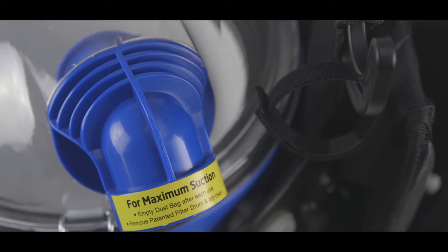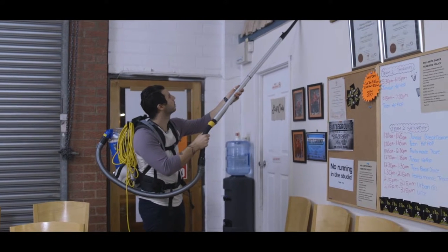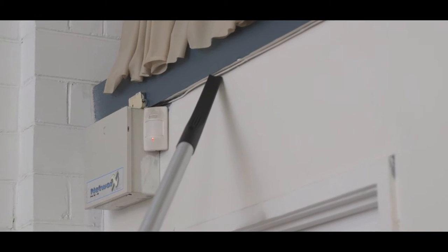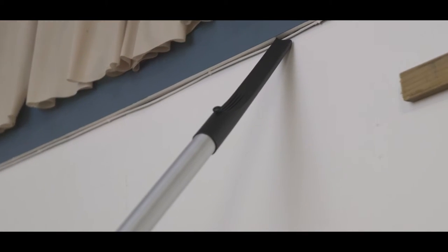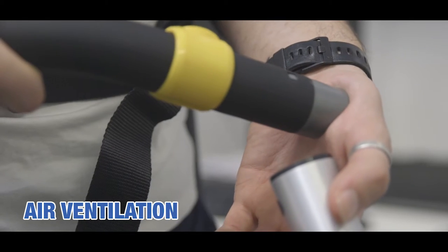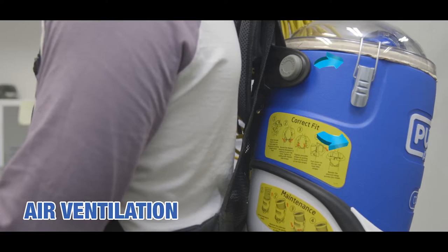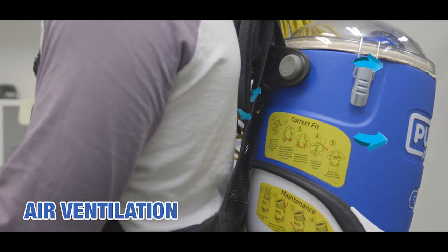Its large 5.5 litre canister is great for cleaning large areas and the patented Vortex filter chamber provides a large filtration surface for prolonged cleaning performances. Other user friendly features include patented active air ventilation to keep your back cool during use,